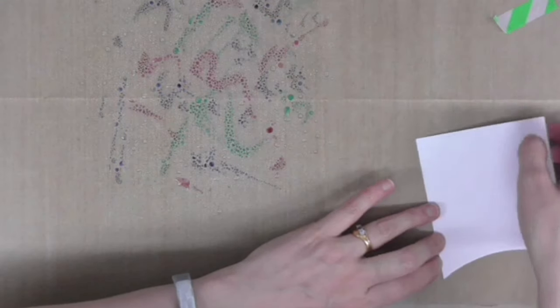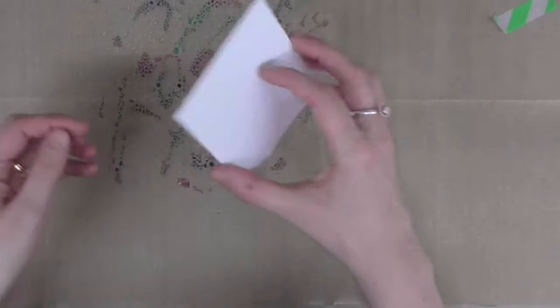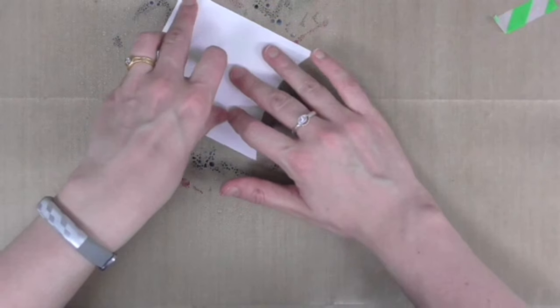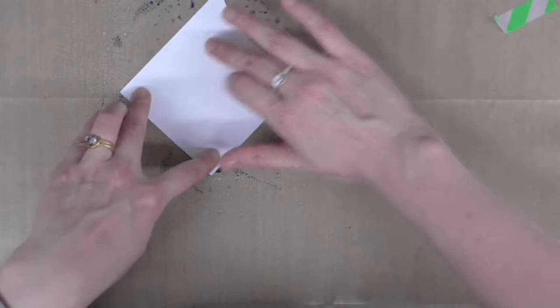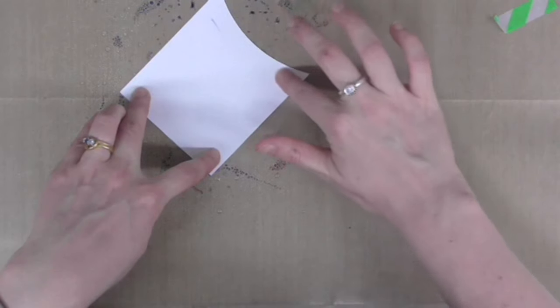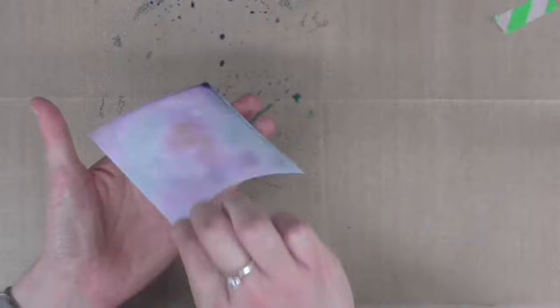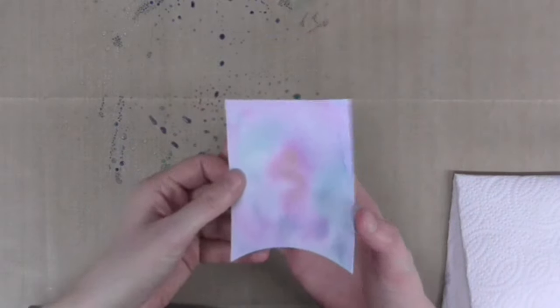So I'm using some different colors of distress inks and smooshing them onto my craft mat, then spraying that with water. Then I can take my cardstock and push it into all those puddles of water, and this will make my card pick up some beautiful soft colors of ink.